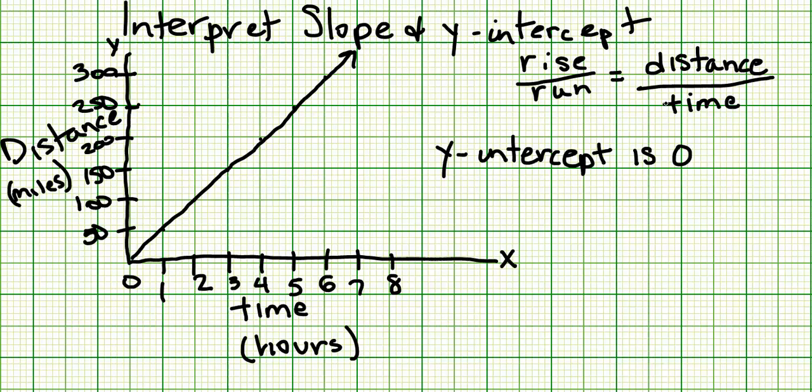When you compare distance to time, you're actually finding the speed. So this graph represents the speed of a car or train compared to the amount of time passing.